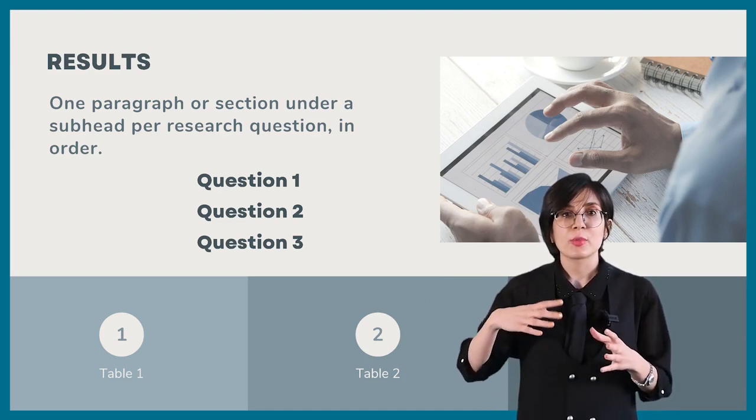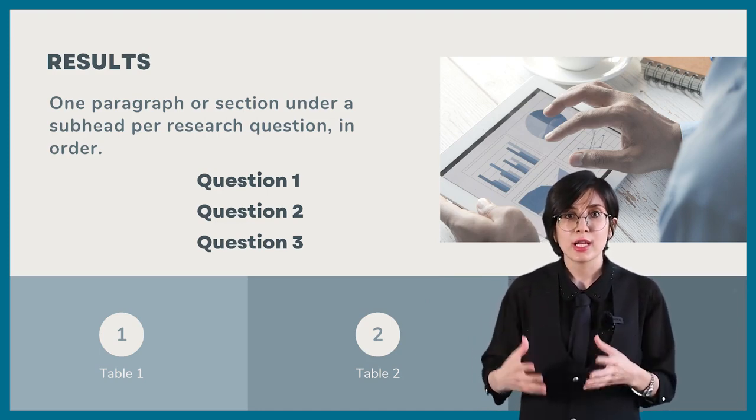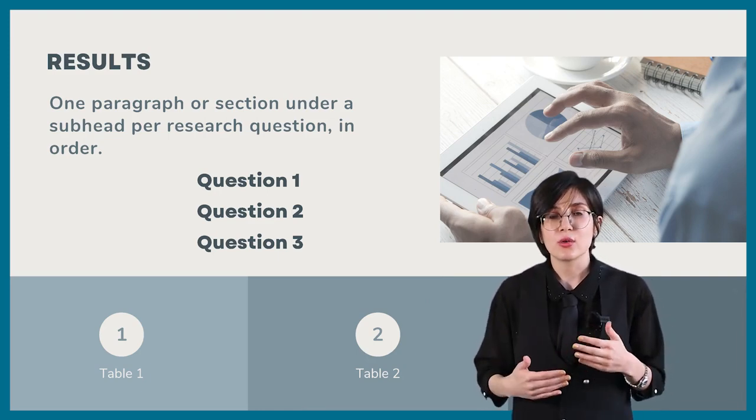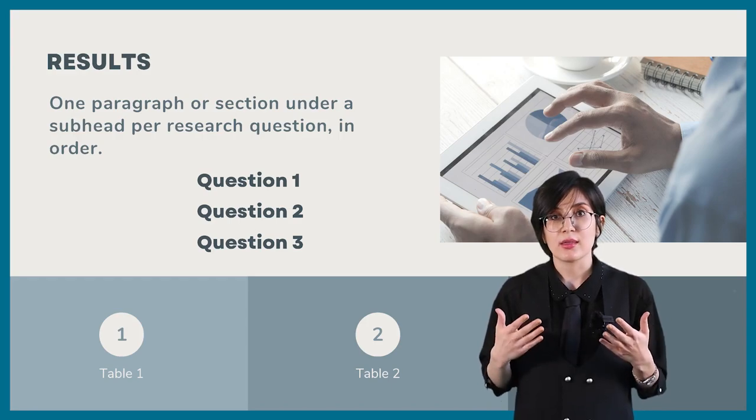Then for each research question, there is one paragraph or section under a subheading. Start each of those paragraphs with the primary answer to the question. And in the sentences that follow, offer the supportive data or statistics on that question.